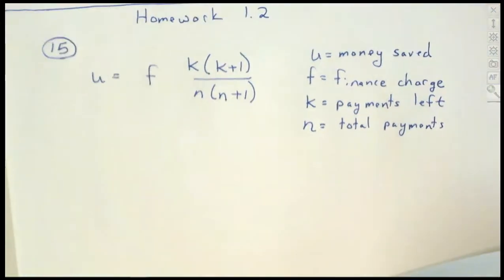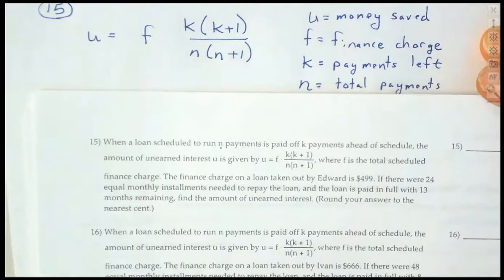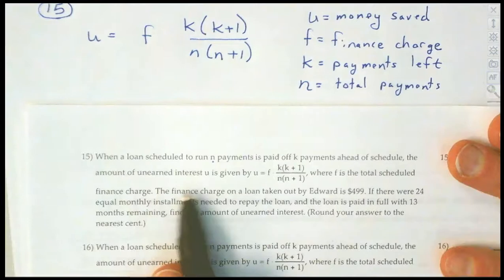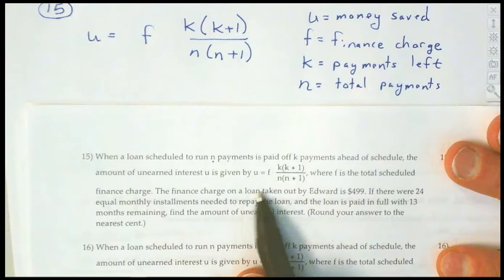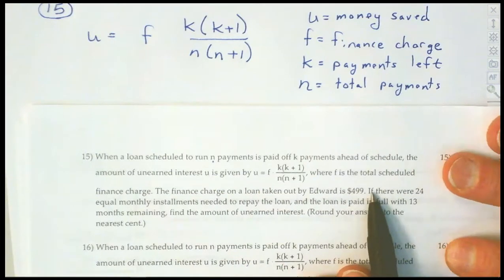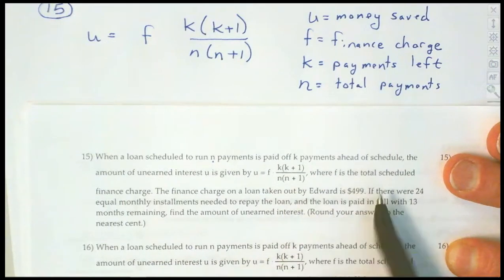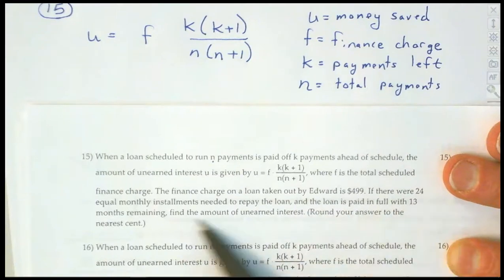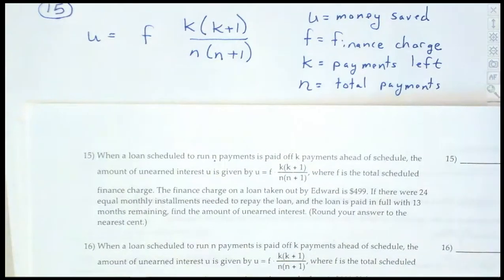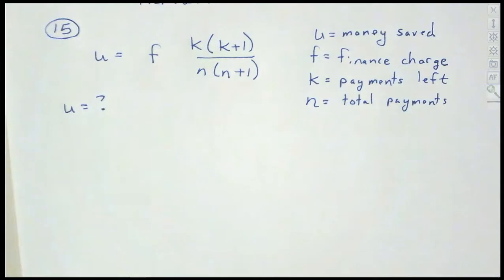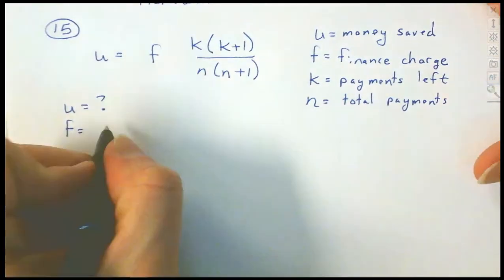Let's go ahead and read the application and figure out where all the pieces go. The finance charge on a loan taken out by Edward is $499. There were 24 equal monthly installments needed to repay the loan — that's two years. The loan is paid off in full with 13 months remaining. Find the amount of unearned interest.